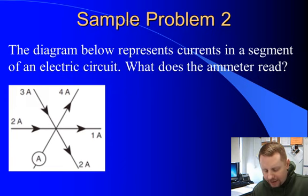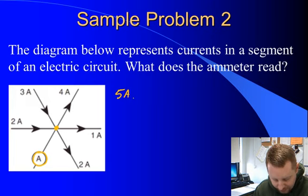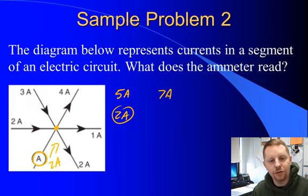Let's take a look at another one. The diagram shows currents in a segment of an electric circuit — what does the ammeter read? We have 2 amps coming in and 3 amps coming in, so 5 amps total in. We have 4 amps out, 1 amp out, and 2 amps out, so 7 amps going out. By Kirchhoff's Current Law, whatever goes in must come out. With 5 coming in currently and 7 going out, there must be another 2 amps coming in through the ammeter.